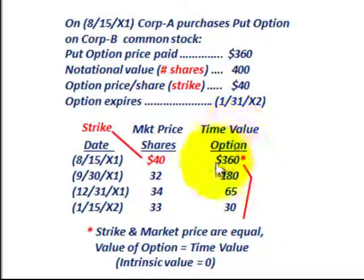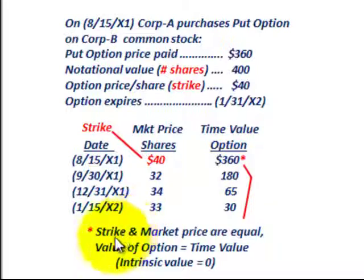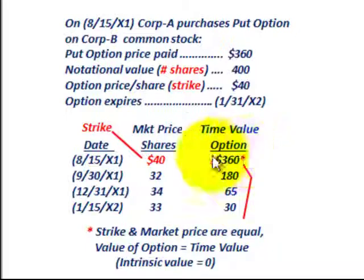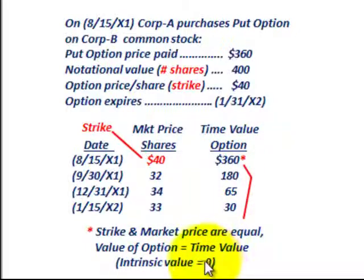So when we purchase the option, all the value of the put option goes into the time value portion, because the strike and the market price are equal. So the value of the option equals its time value of $360, and the intrinsic value is zero.